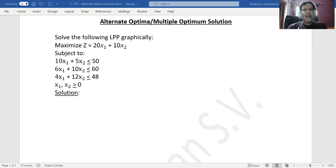Hello everyone, this is in continuation to linear programming problems wherein we were seeing special cases of solutions which are possible in linear programming problems. The next special case is alternate optima solution or multiple optimum solution. Again, we'll understand this through an example.